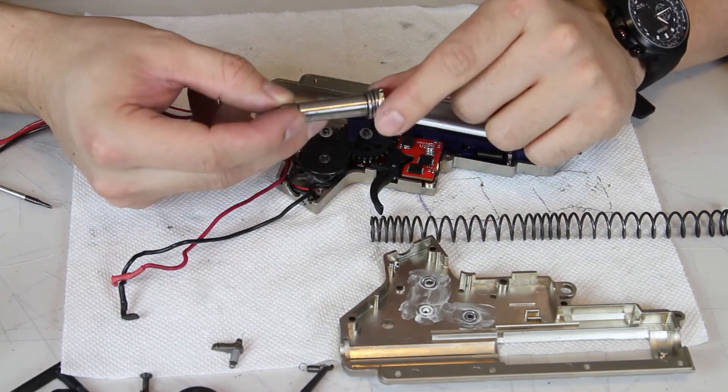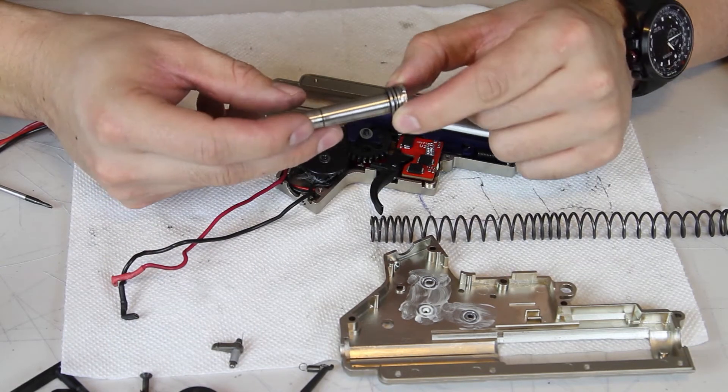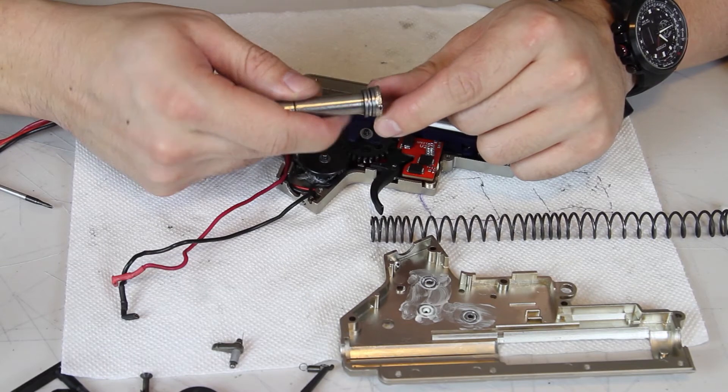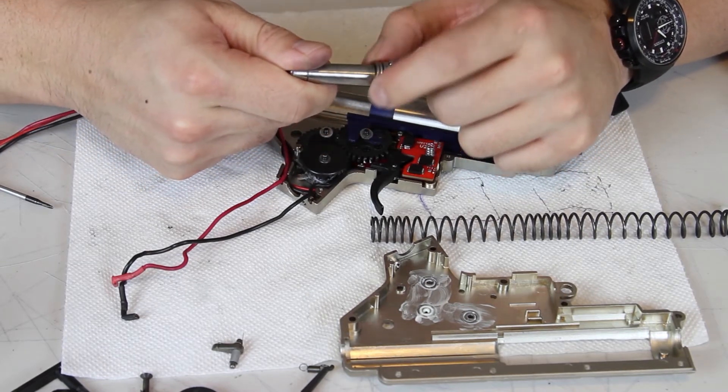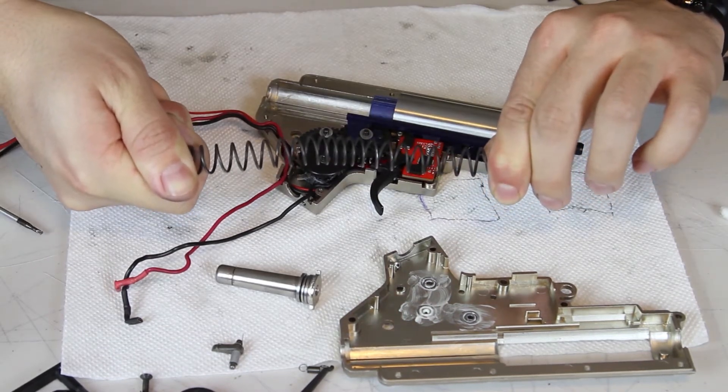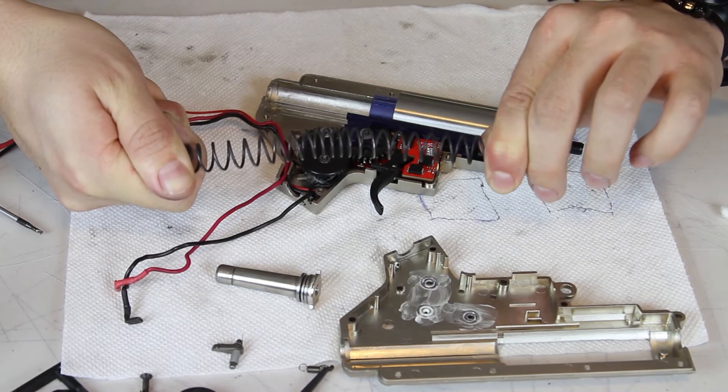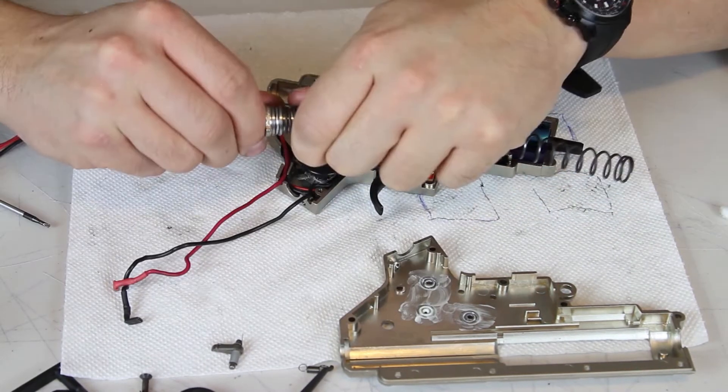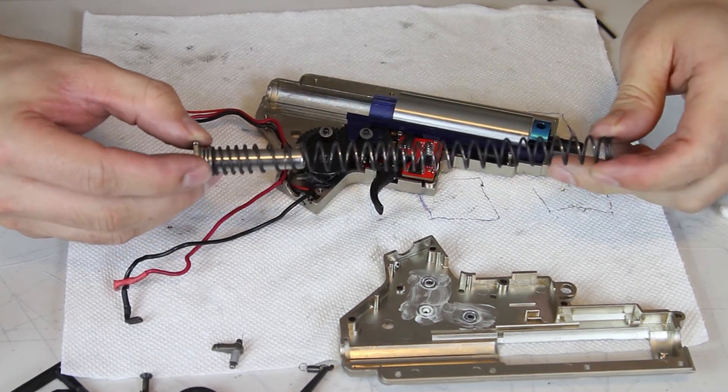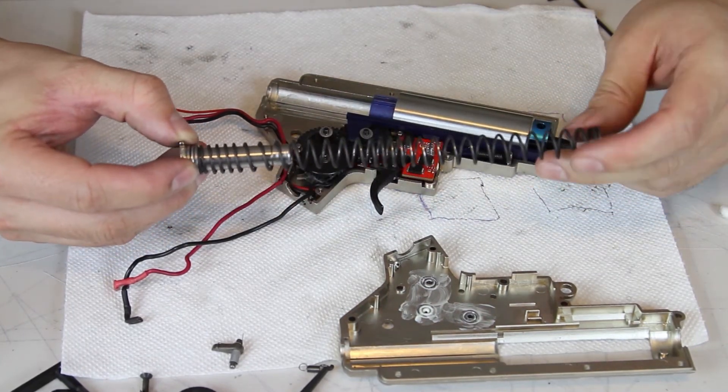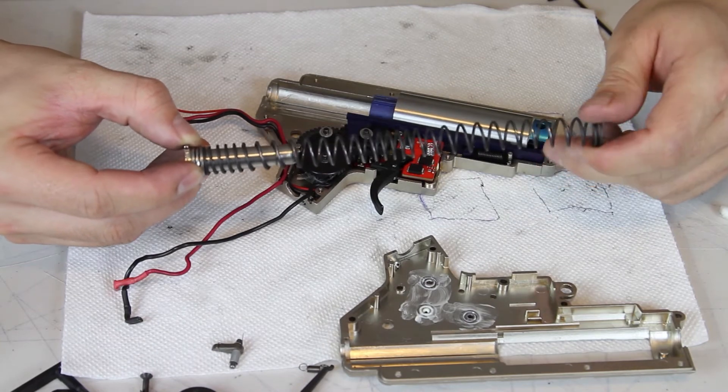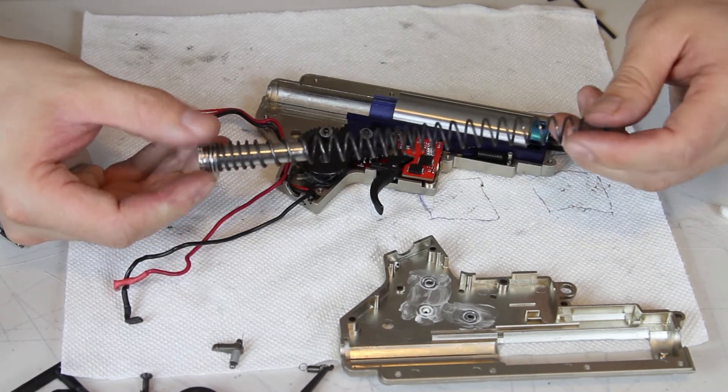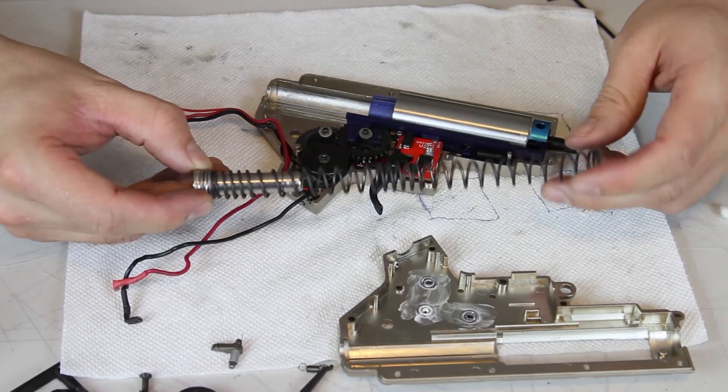Starting with the spring guide, you can see that Jason's is an upgraded one. It is all metal and has a rotating bearing plate on the back. This is very beneficial because as the spring gets compressed over and over, it will begin to turn and twist. That can cause additional strain on your gearbox and even contribute to shot inconsistency. Having a rotating bearing plate allows the spring to free spin, relieving that tension and staying straight. Jason's spring is an S110 spring, which is based on the FPS rating that he wants in his gun. Obviously, it's up to you to decide what spring you want in yours.